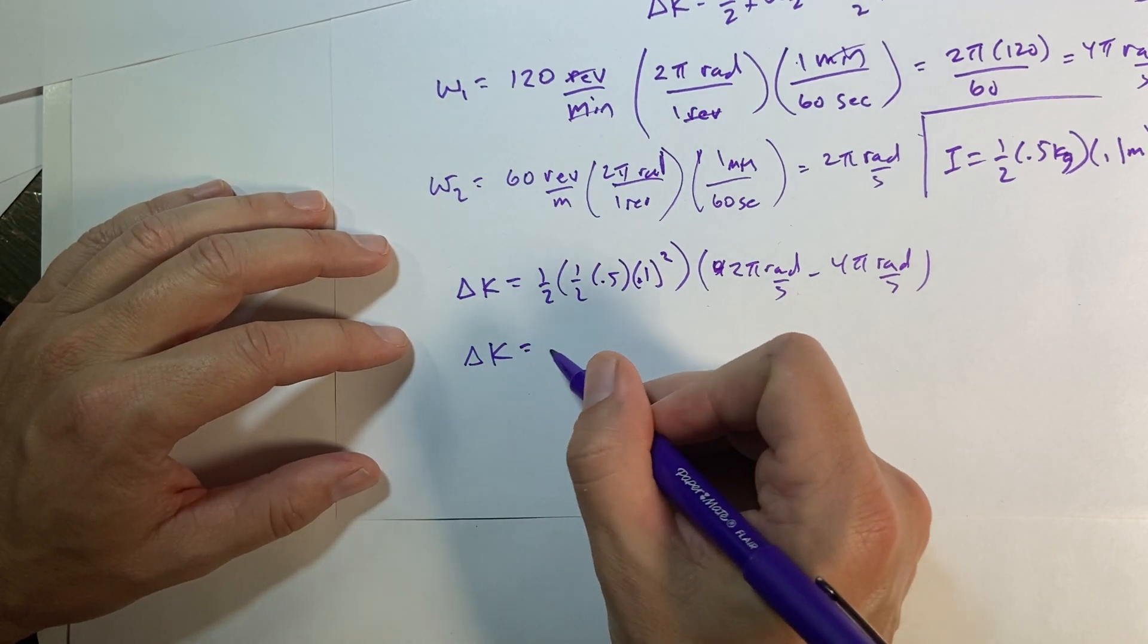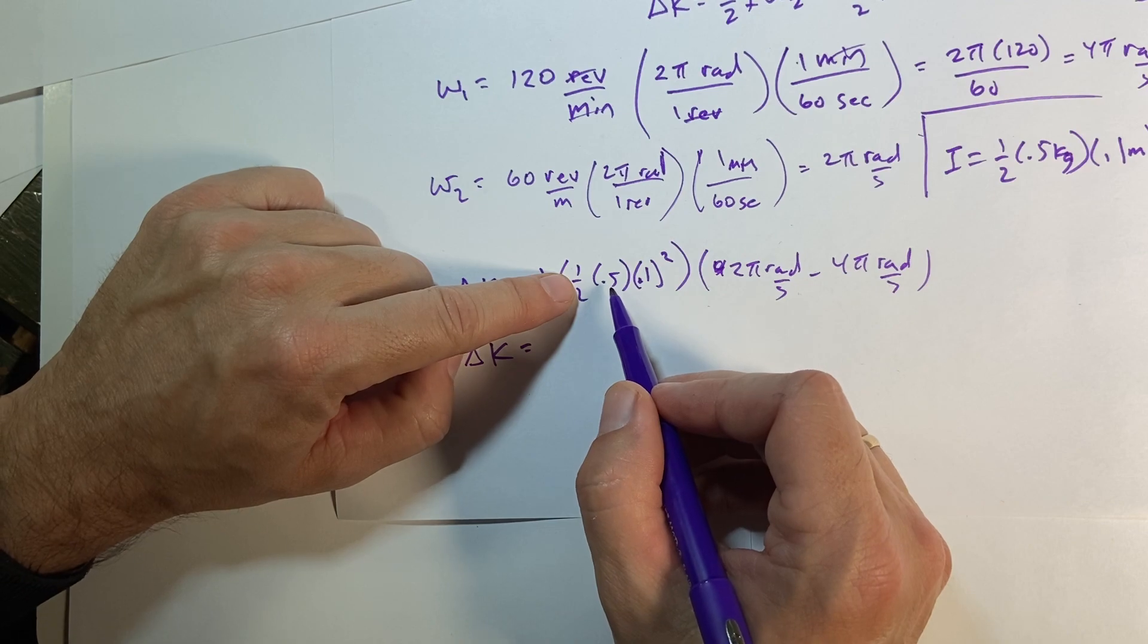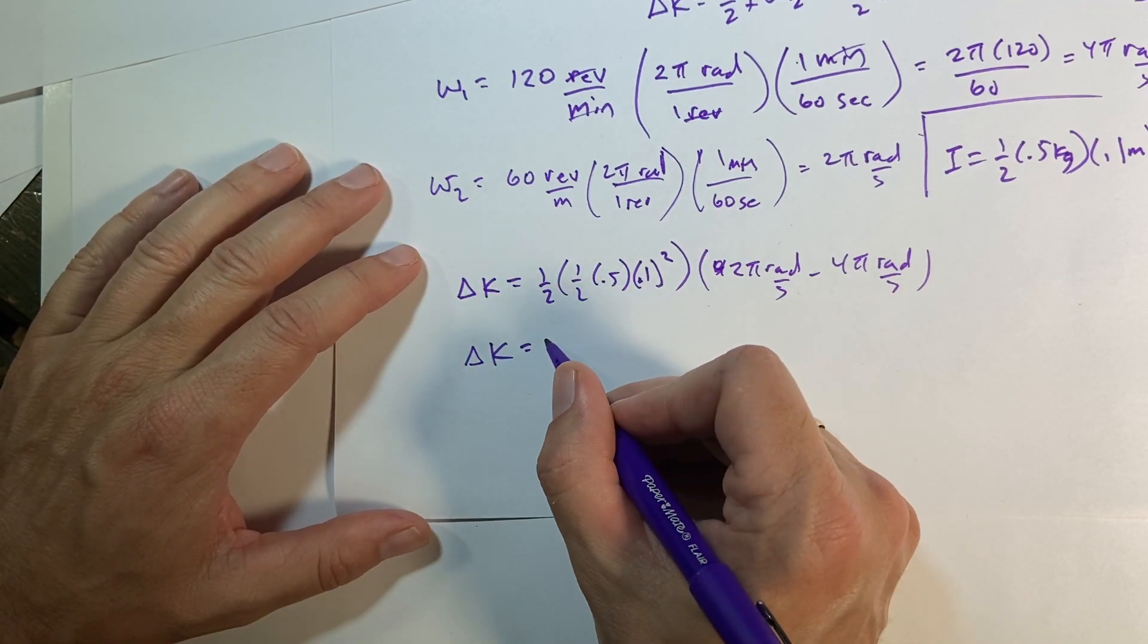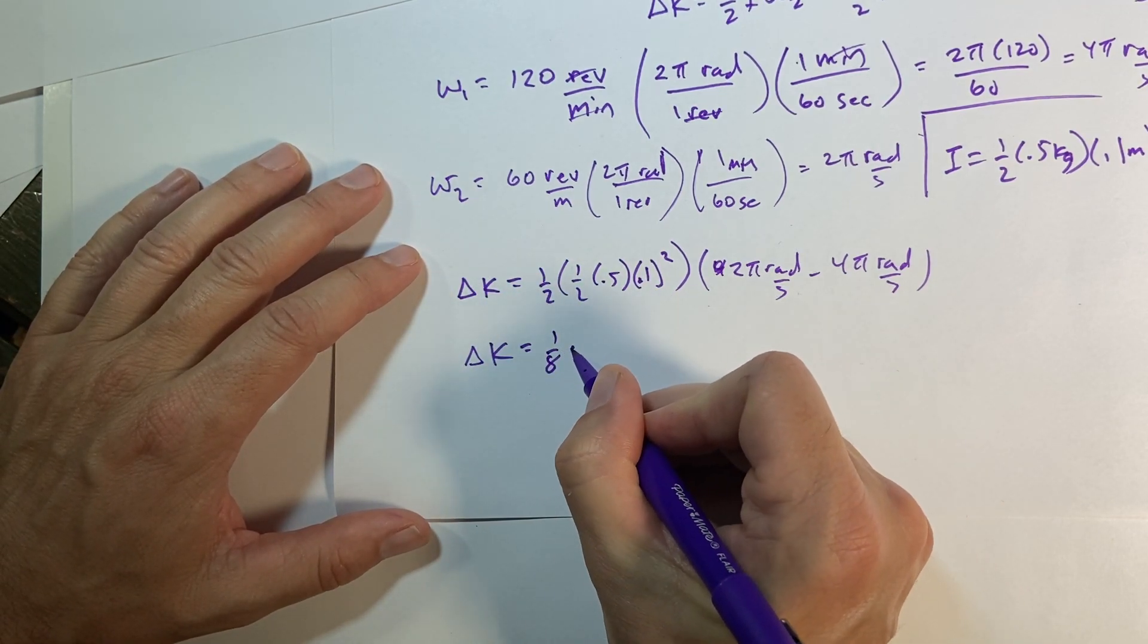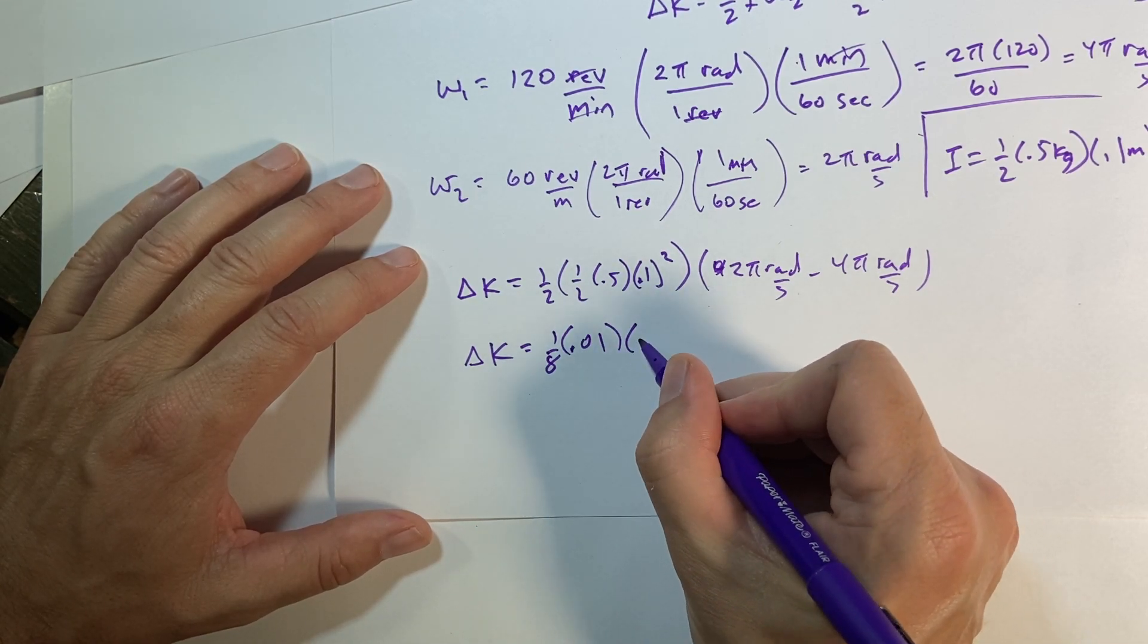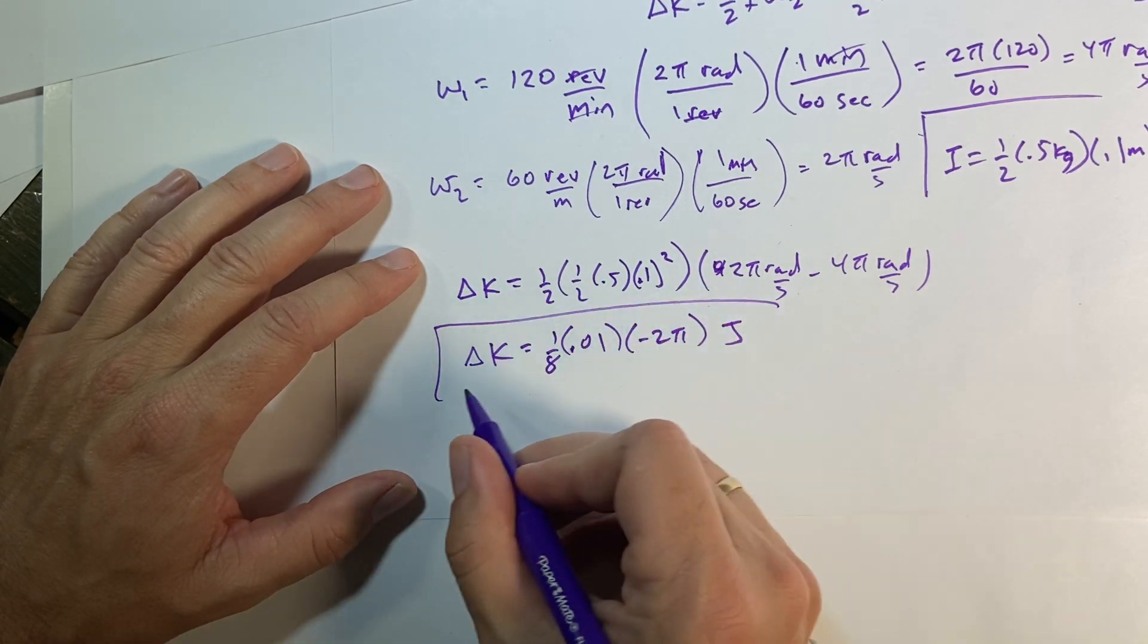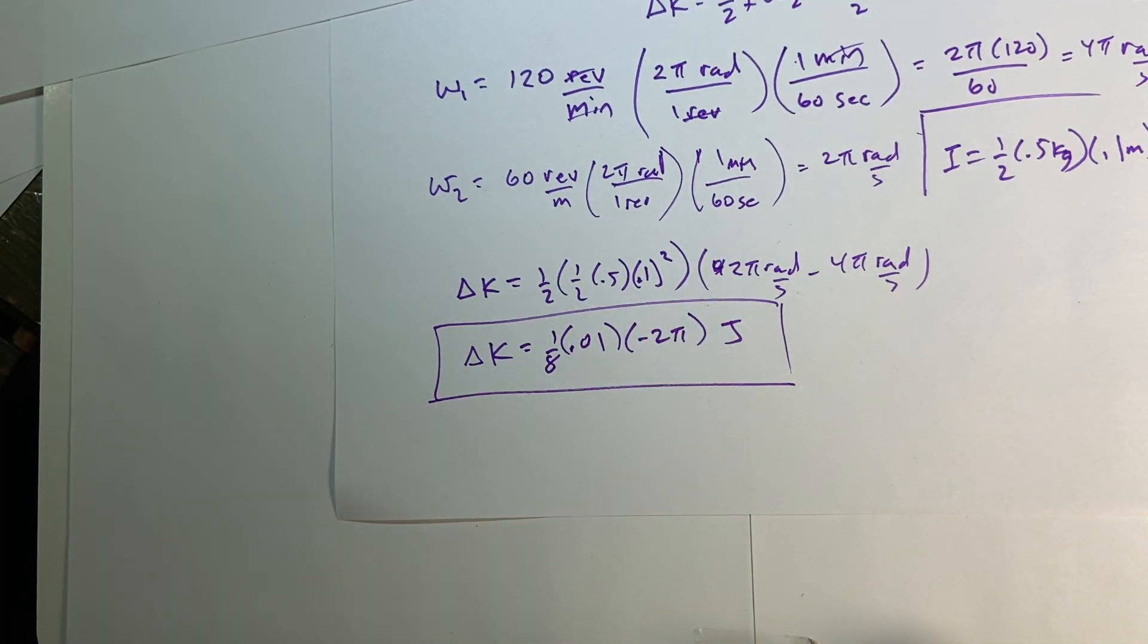So delta k is going to be, let's just put this all together. I get 1 half times 1 half times 1 half, so it's 1 eighth. So 1 eighth times 0.01, that's that, times negative 2 pi, and that's going to be in joules. And I'm going to leave it like that. So there you go.